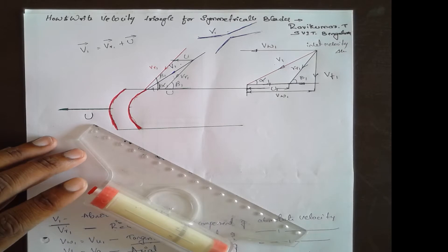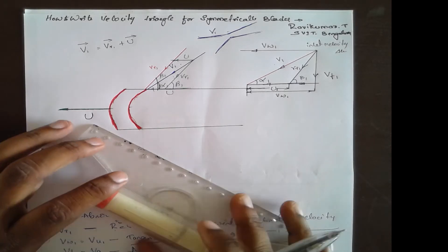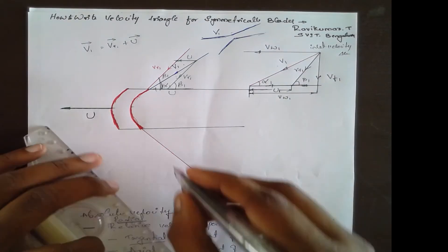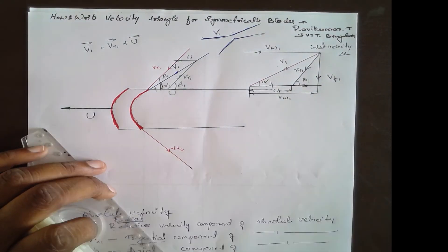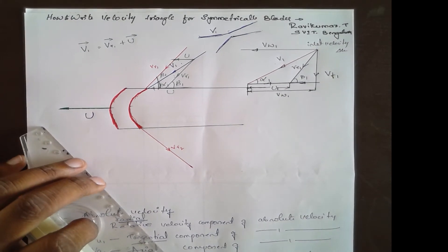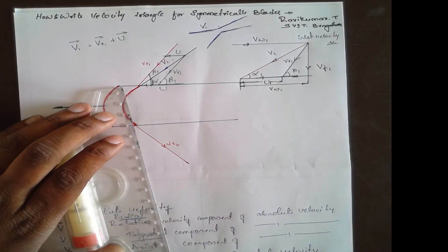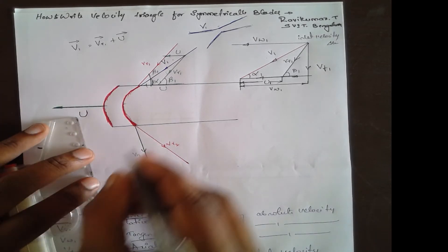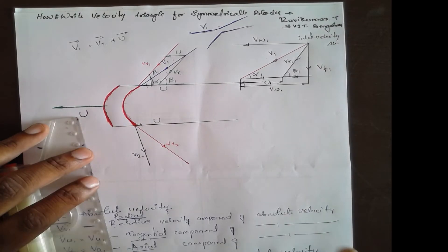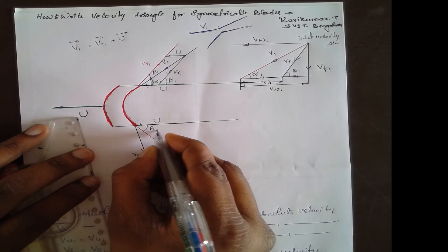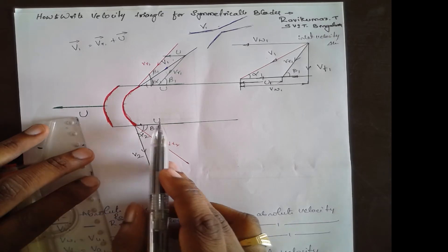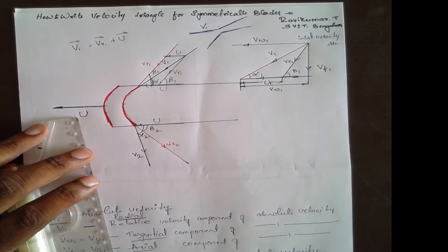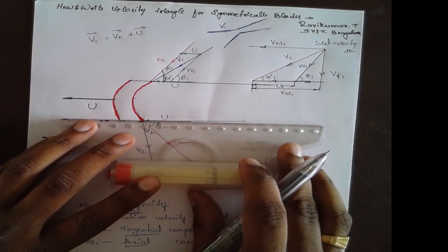For the outlet velocity triangle, first write vr2, which is the tangent to the blade periphery. Then draw v2 — v2 is the inlet to the next stage stator blade. Mark u moving right to left. The angle between u and vr2 is beta2, and the angle with v2 is alpha2.